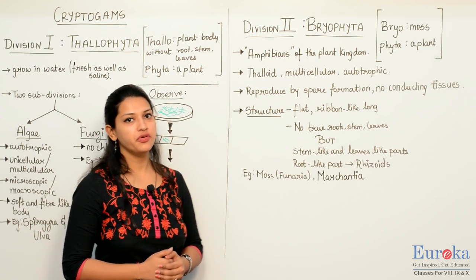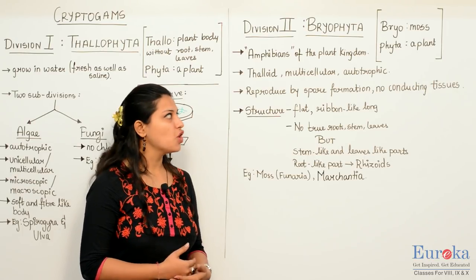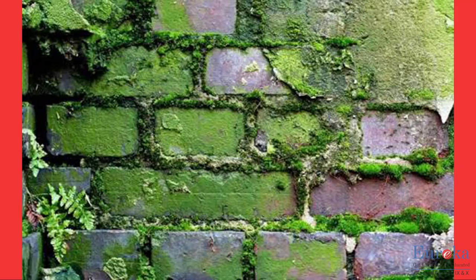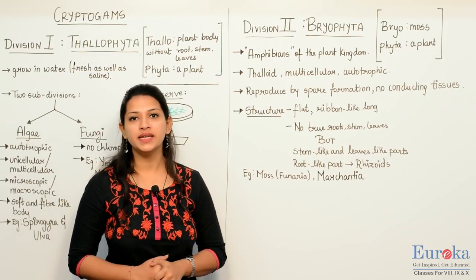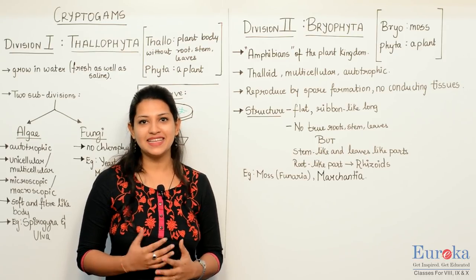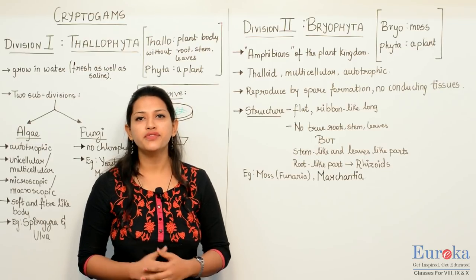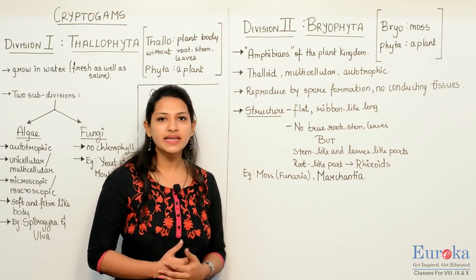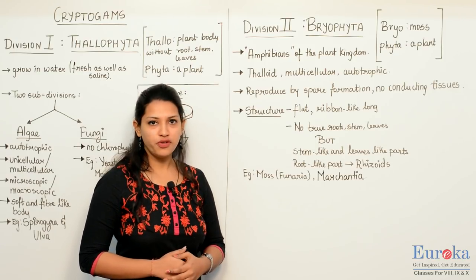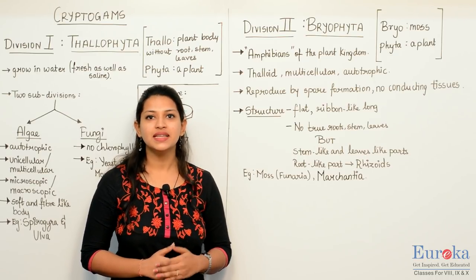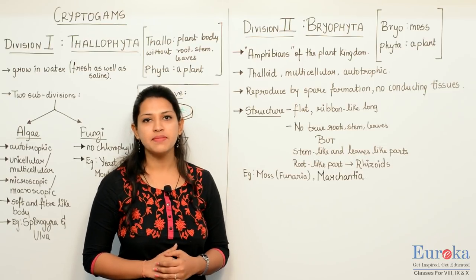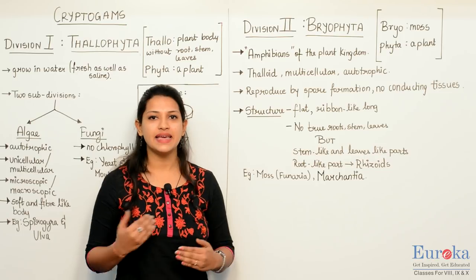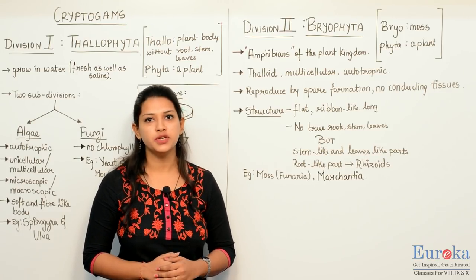The second division of cryptogams is Bryophyta. 'Bryo' means moss and 'phyta' means a plant. You must have noticed some green lush growth in the monsoon season on rocks and walls — these are plants belonging to Bryophyta. They are known as the amphibians of the plant kingdom because they live on land but need water for reproduction. They are multicellular and autotrophic. They reproduce by spore formation and do not have conducting tissues — that is, no xylem and phloem. Their structure is flat and ribbon-like. They do not have true stem and leaves, but have structures resembling stem and leaves, and also root-like structures known as rhizoids.